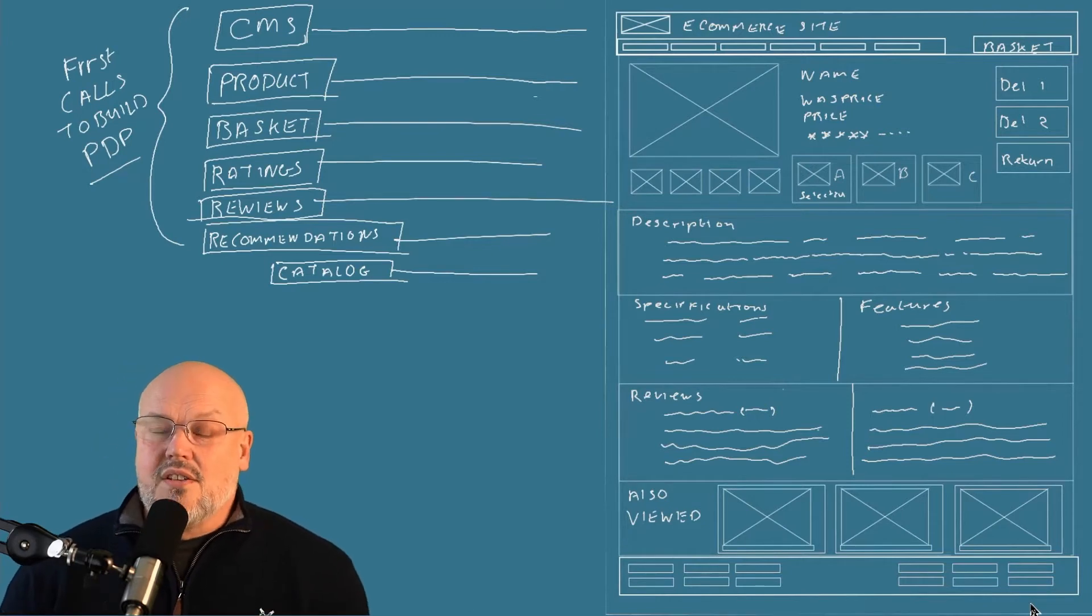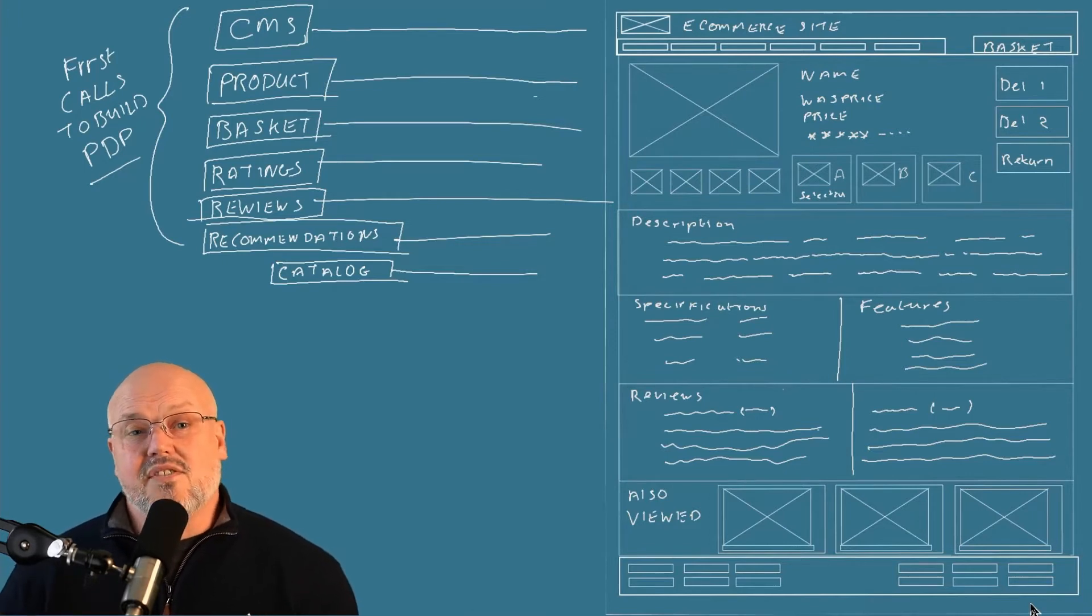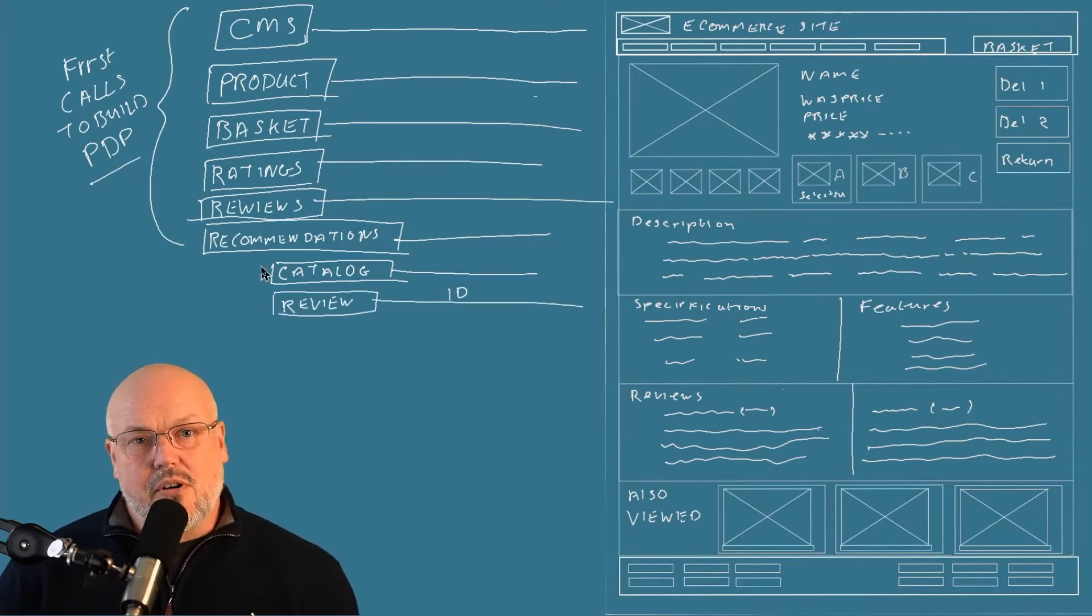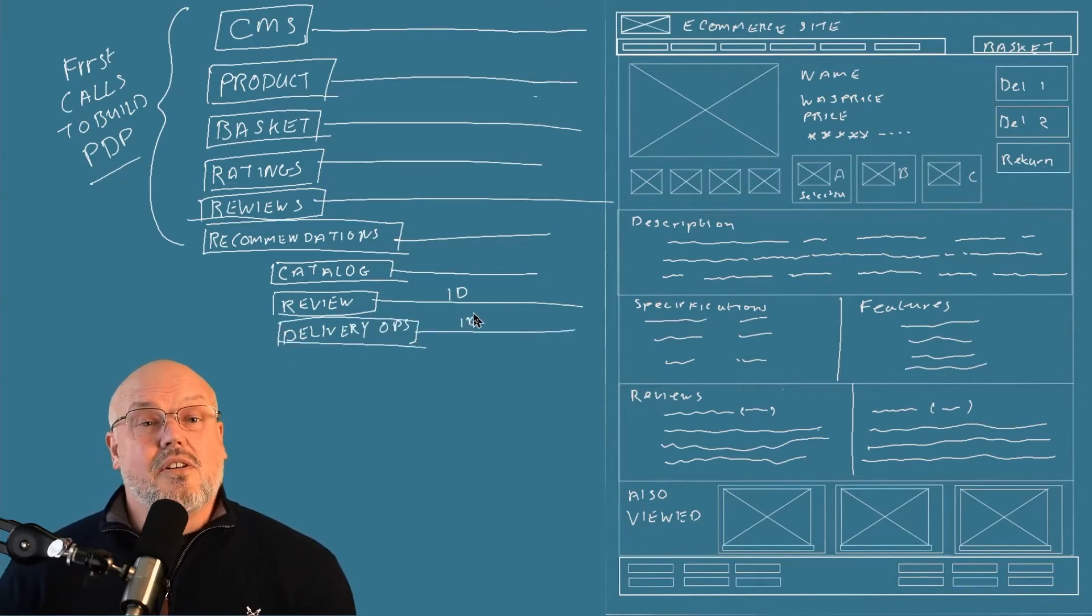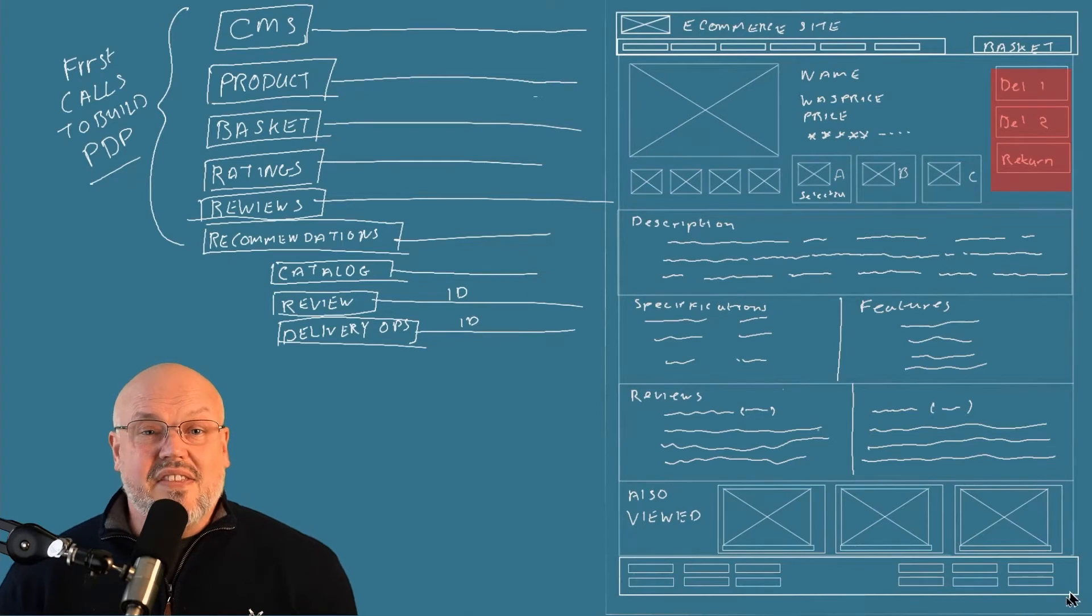The product call itself will bring back the basic details of the product such as its name and description. It will also bring back a list of variants, and in that list it will indicate which variant is the default variant. The product call may also bring back the references for the delivery and return options, and you may need to call another API to get the details for the deliveries and the return options.